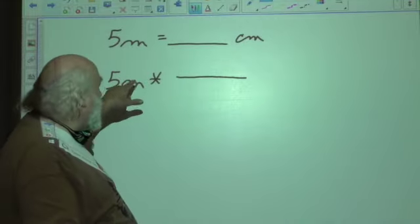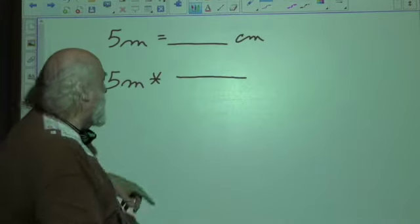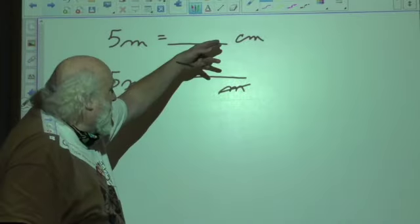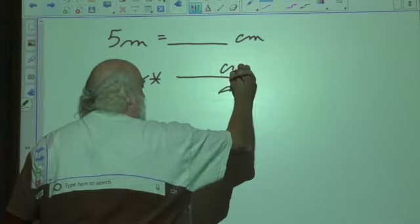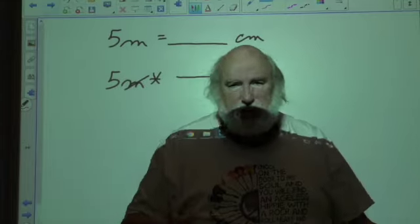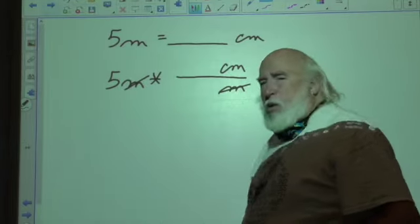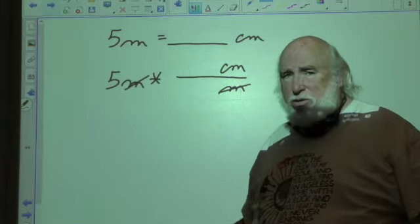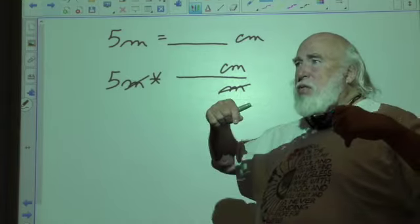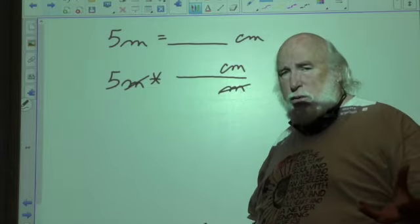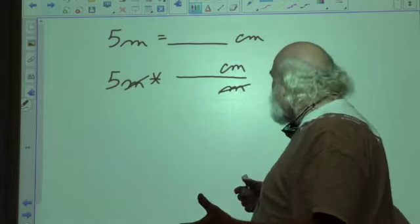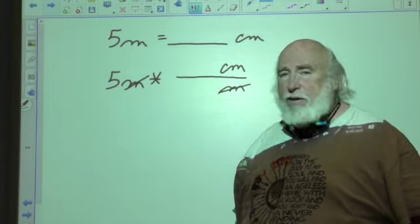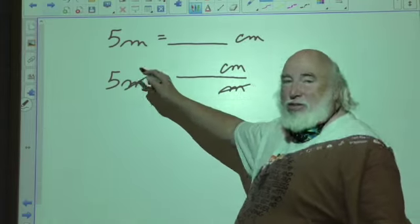To get rid of the meters and end up with centimeters, we have to put meters in the denominator over here so that they will cancel out. That means we can put the centimeters on top. Now what we are doing is not changing the measurement. The measurement itself is the length of 5 meters. What's changing is the units that we're using to measure that length, and that unit is considered to be centimeters. But it's still 5 meters length end to end.